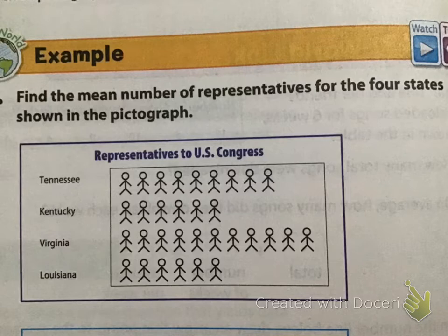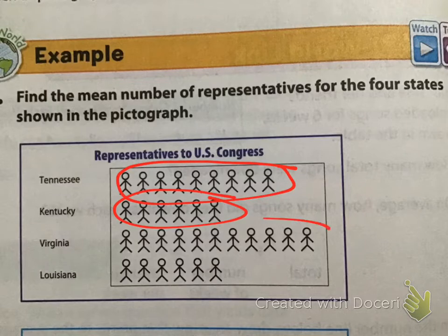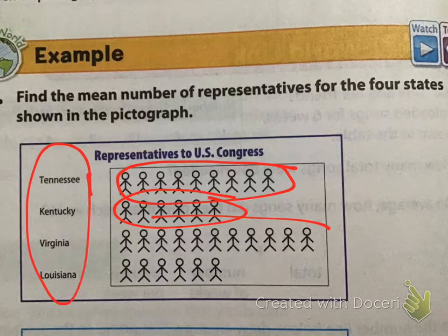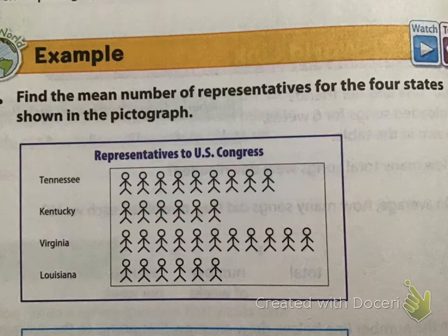So, here, it wants us to find the mean number of representatives. What we have to do is we have to add up the numbers and then divide by the amount of numbers. We know that there are four different states. So, in the end, we're going to be dividing by four. And we want to find the average number total. So, we're going to add them all up.